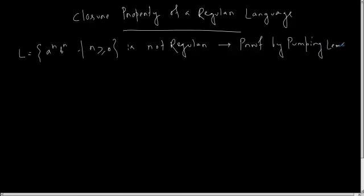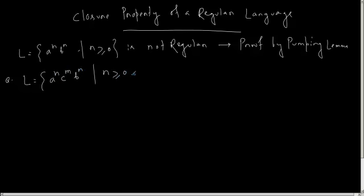Now let us look at another problem. Suppose the question is: prove that the language given by a to the power n, c to the power m, b to the power n, where n is greater than or equal to 0 and m is greater than or equal to 0, is not regular.